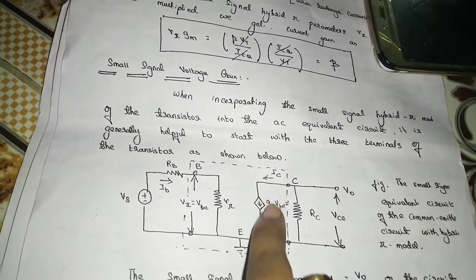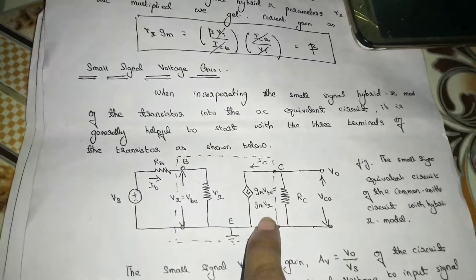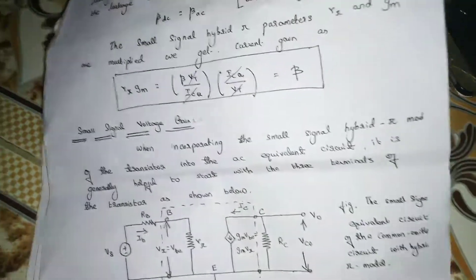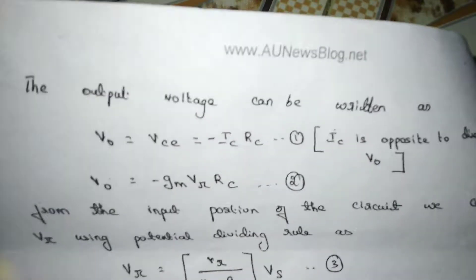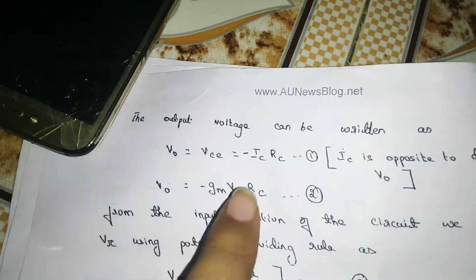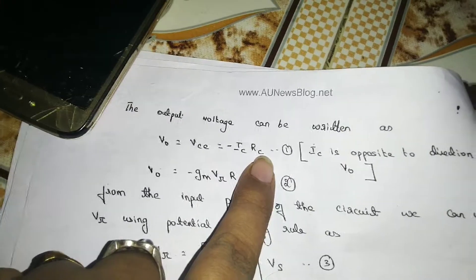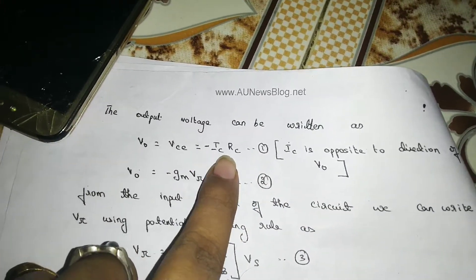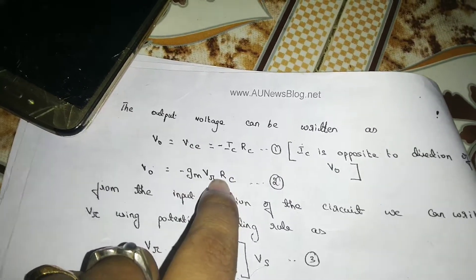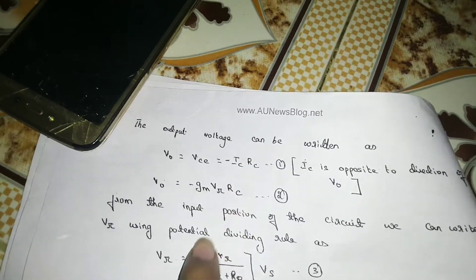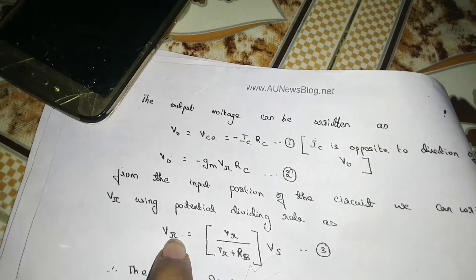So, what is IC? IC is equal to Gm into VBE, or Gm into Vpi. So, we find out V0. V0 is equal to VCE equal to minus IC into RC, and IC is equal to Gm into Vpi into RC. So this is V0. Now, if you want to find the input, Vpi will be the input. So, input voltage is Vpi.